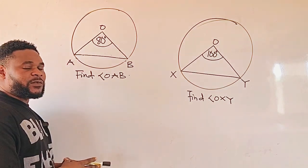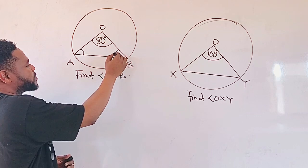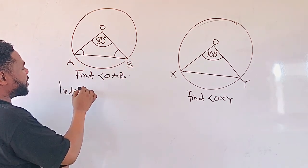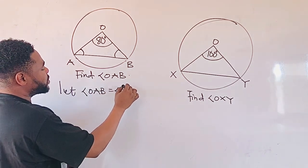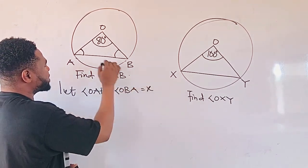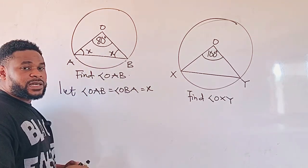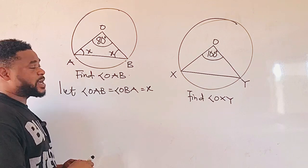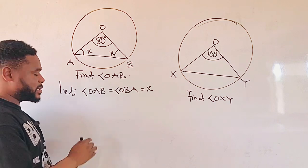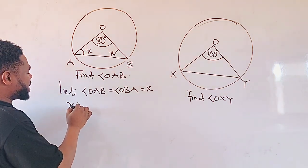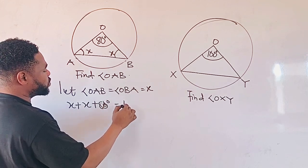With the property of an isosceles triangle, these base angles are equal. By doing that, we can say let angle OAB equal to angle OBA, or equal to X. So we can put X here and also put X here. There is a property in triangles that any time we sum all the interior angles, it must be equal to 180 degrees. Therefore, we can say X plus X plus 80 should be equal to 180.